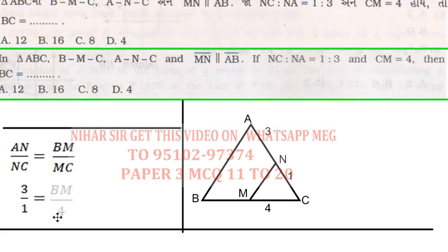Now 3/1 equals BM/4. 3 times 4 divided by 1, so BM equals 12. But 12 is not my answer, they want BC. So BC will be BM + MC, that's 12 + 4 = 16. So my correct answer is B, 16.